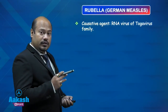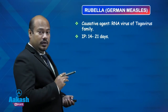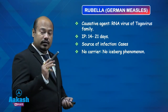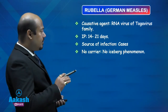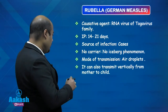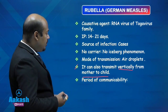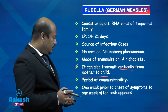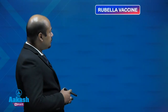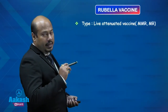Rubella, also called German measles, is caused by a togavirus — an RNA virus of the togavirus family. Incubation period is two to three weeks. Just like measles, there is no carrier state in rubella, so there is no iceberg phenomenon. Mode of transmission is air droplets, but importantly rubella can also transmit vertically from mother to child. Period of communicability is one week prior to onset of symptoms to one week after rash. A single attack gives lifelong immunity.